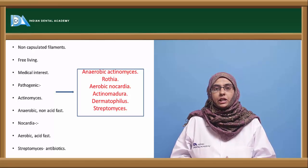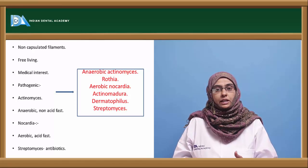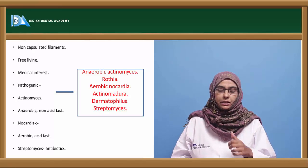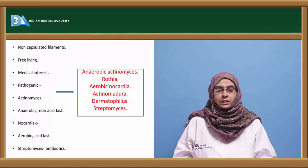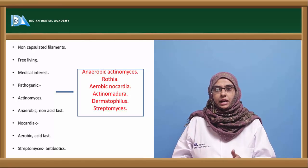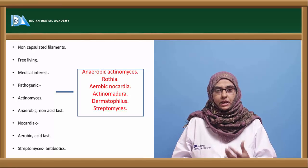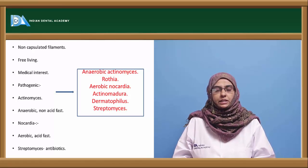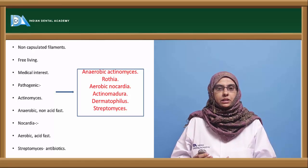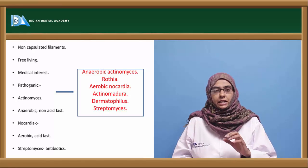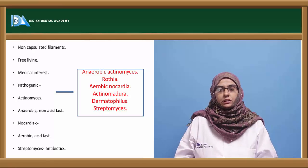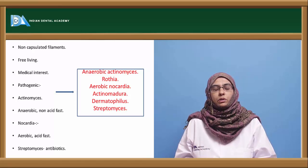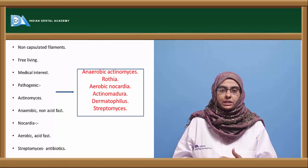Actinomycetes of medical interest include anaerobic actinomycetes, Rothia, aerobic Nocardia, and Streptomycetes. The organisms mostly involved in human pathology are anaerobic actinomycetes, which are non-acid fast. Nocardia are aerobic and acid fast. Streptomycetes, while also a causative agent, have more importance in the production of antibiotics. The two important groups causing human infections are anaerobic actinomycetes and aerobic Nocardia.